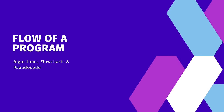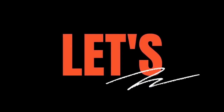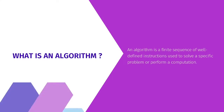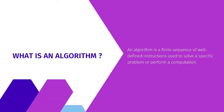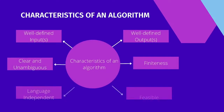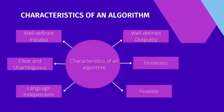So first of all, let's talk about algorithms. What is an algorithm? An algorithm is a finite sequence of well-defined instructions used to solve a specific problem or perform a computation. Next, what are the characteristics of an algorithm? An algorithm must be clear and unambiguous — that means each of its steps should be clear in all aspects and must lead to only one meaning.